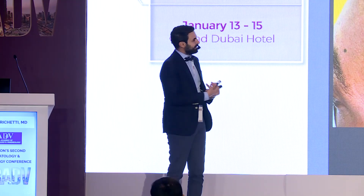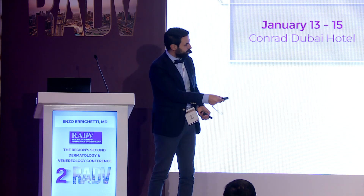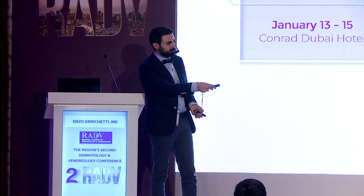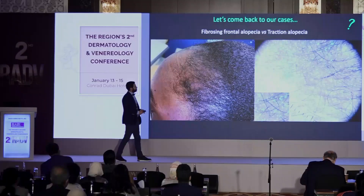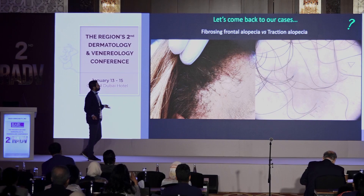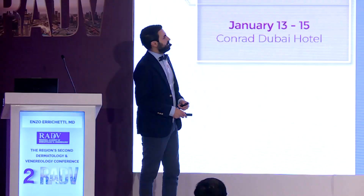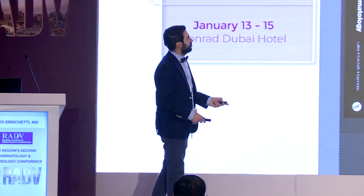So the key question when facing this differential diagnosis is: do we have vellus or thin hairs? If yes, likely traction alopecia; if no, likely fibrosing frontal alopecia. Lonely hairs are more common in fibrosing frontal alopecia, and broken hairs are more common in traction alopecia. Case: traction alopecia confirmed — we have thin hairs compared to the others. Second case: no vellus hairs and two lonely hairs present — this is frontal fibrosing alopecia.